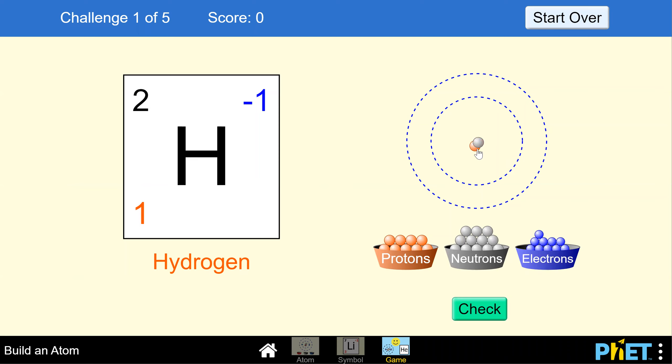So we're going to add a neutron. Then we think about what the top right number means—that's the overall charge. Remember, protons are positive, electrons are negative. Right now we're at positive one because we have one proton and no electrons, so we'll go ahead and add an electron.